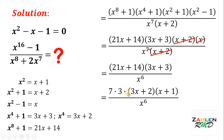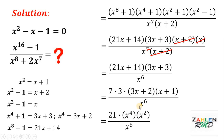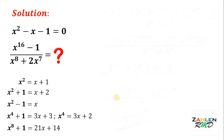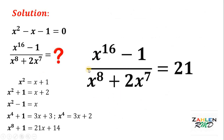Substituting those values, the expression becomes 21 times x to the fourth power times x squared, all over x raised to 6. Since x to the fourth times x squared equals x raised to 6, we can cancel x raised to 6 in the numerator and denominator. This gives us a value of 21. Therefore, the value of x raised to 16 minus 1, all over x raised to 8 plus 2x raised to 7, equals 21. And we're done.